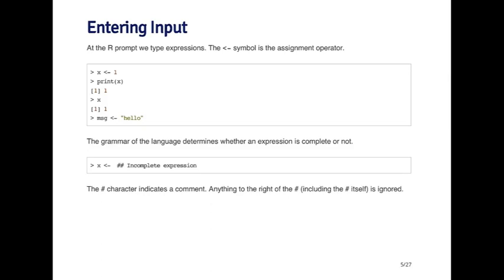In this expression over here, I'm creating a new symbol called msg, and I'm assigning it a value of the string hello. So now this is a character vector, and the first element of this character vector is the string hello. I could add other elements to this vector if I wanted to, but they would all have to be character.